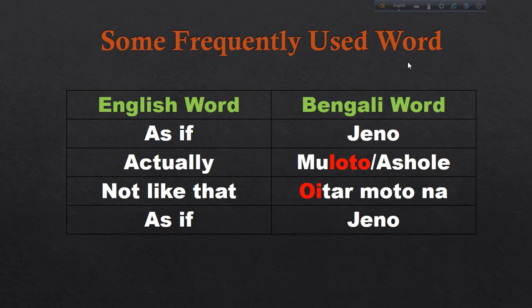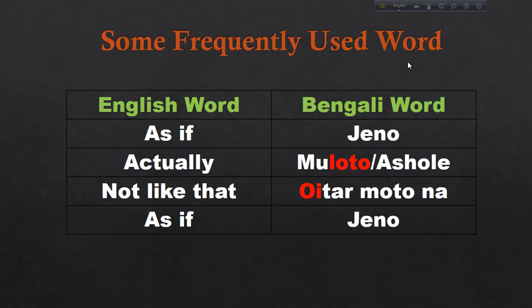'As if' means 'jeno', and 'actually' means 'asholy' or 'muloto'. So to recap: 'jeno' means 'as if', 'oitaar moto na' means 'not like that'.